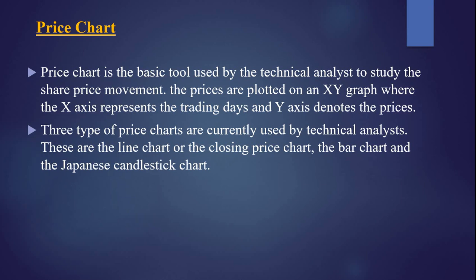Whatever changes there are in the share prices — for example, first it is 100, next 120, next 80 — those changes are represented on the Y axis. Basically, we use three types of charts for technical analysis: one is line chart, second is bar chart, and third is Japanese candlestick chart. Now we will see these charts one by one.